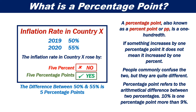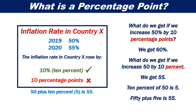Percentage point refers to the arithmetical difference between two percentages. 10% is one percentage point more than 9%. So, what do we get if we increase 50% by 10 percentage points? We get 60%. What do we get if we increase 50 by 10%? We get 55. 10% of 50 is 5. 50 plus 5 is 55.